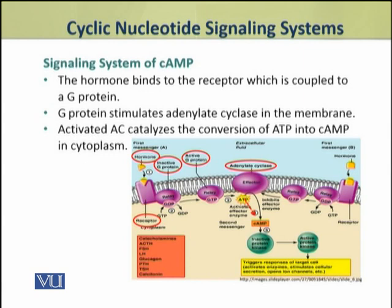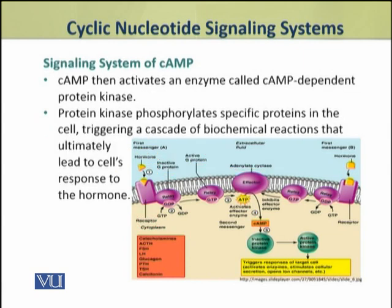This cyclic AMP activates an enzyme which is called the cyclic AMP-dependent protein kinase. These are the marker proteins that connect and initiate downstream signaling.